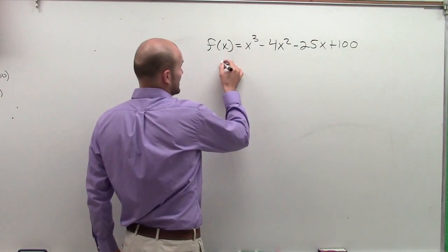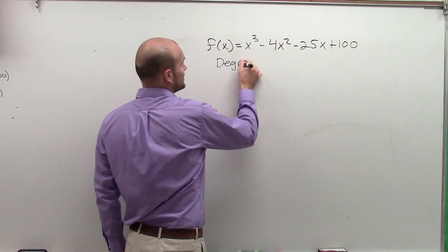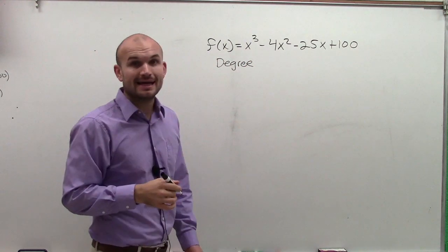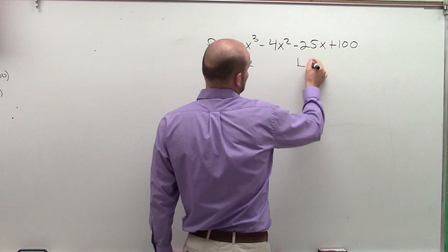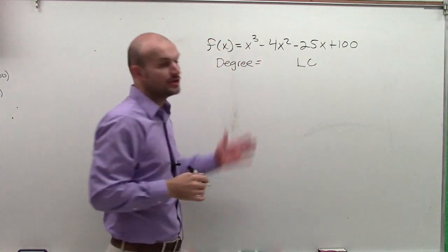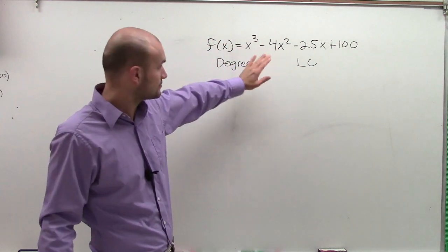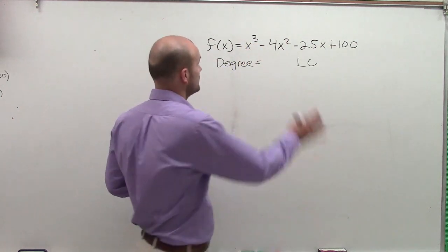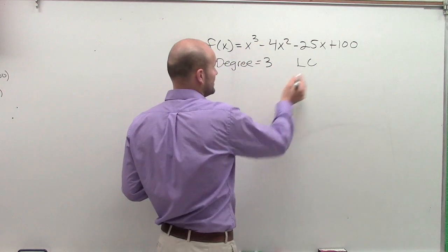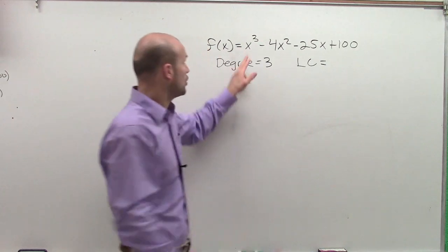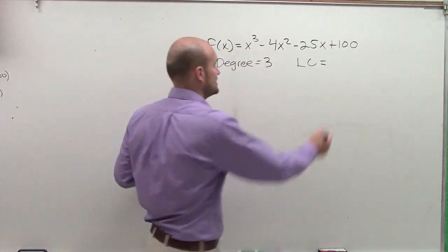So I want to determine the end behavior. And to determine the end behavior, we need to look at the degree, and we need to look at the leading coefficient. So here, the degree, remember, is going to be your largest exponent in your polynomial. So in this case, I have a degree 3. And my leading coefficient is your coefficient of your leading term, which in this case is 1.